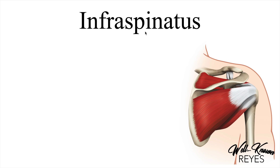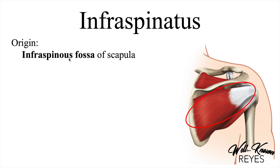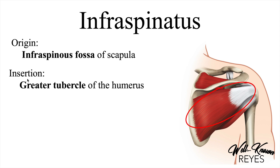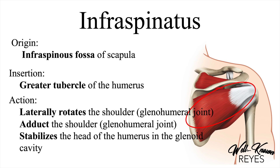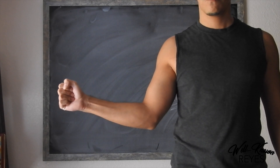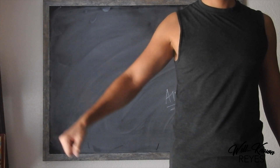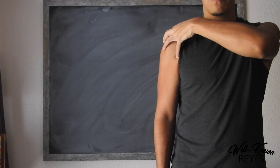The next one is the infraspinatus, that is this muscle right here. Its origin is the infraspinous fossa of the scapula, right here. Its insertion is the greater tubercle of the humerus — notice that the supraspinatus also inserted there, but the infraspinatus inserts just a little bit posterior on the greater tubercle. This is the posterior view of the individual, as we can see the spine of the scapula and the acromion. The actions of the infraspinatus are to laterally rotate the shoulder at the glenohumeral joint, adduct the shoulder at the glenohumeral joint, and stabilize the head of the humerus in the glenoid cavity.